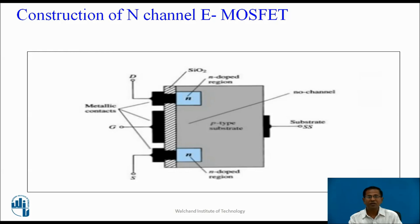Construction of N-channel Enhancement type MOSFET: it is a lightly doped P-type semiconductor material in which two heavily doped N regions are diffused, representing the source and drain. The body is represented by the substrate (SS). Between the gate and body, there is a thin SiO2 oxide layer, so there is no direct electrical connection between the gate and body, making the input impedance very high.